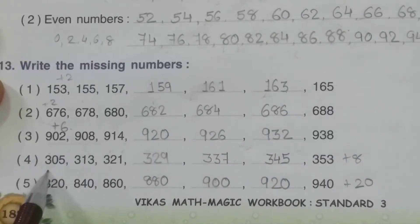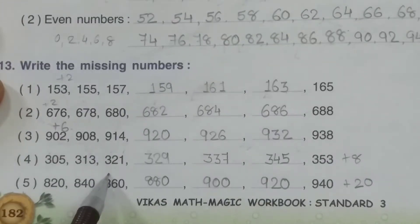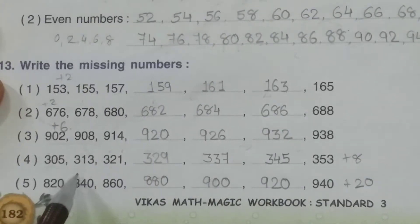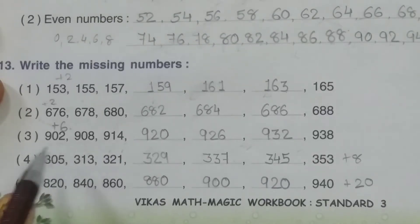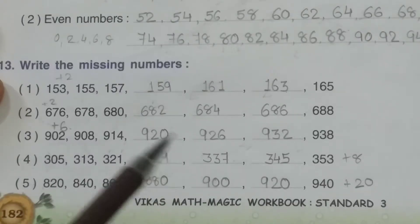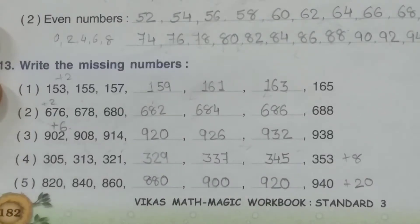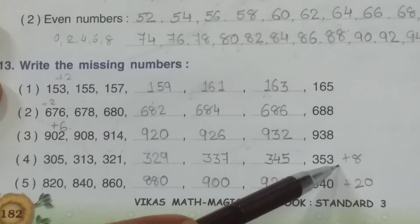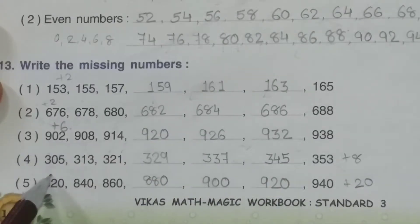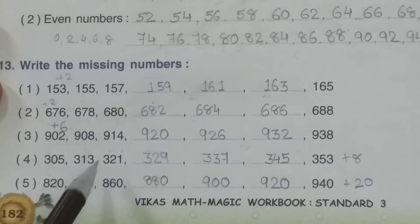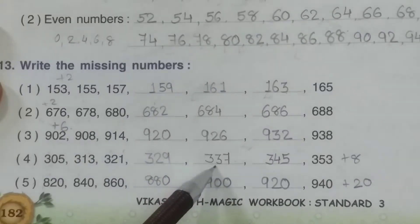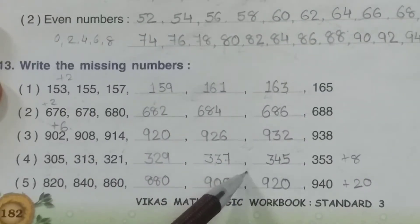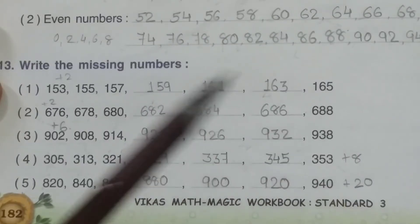Now see the fourth one: 305, 313, 321. Again, find the difference: 313 minus 305 = 8. And the numbers are increasing, so plus. Your difference is plus 8. So, 305 plus 8 = 313, plus 8 = 321, plus 8 = 329, plus 8 = 337, plus 8 = 345, plus 8 = 353.